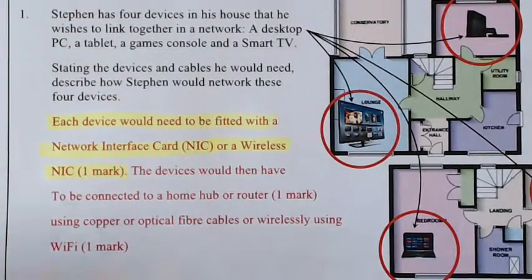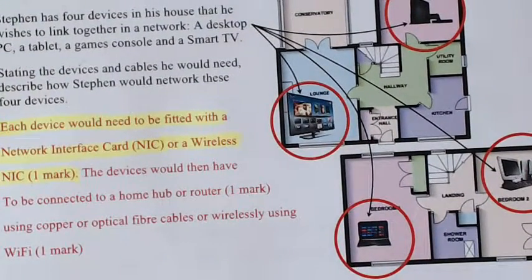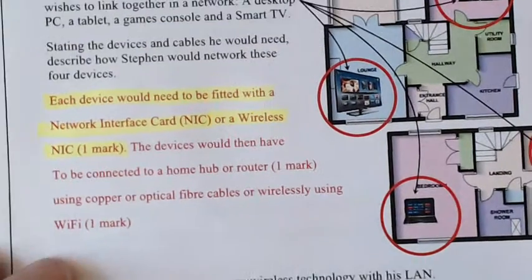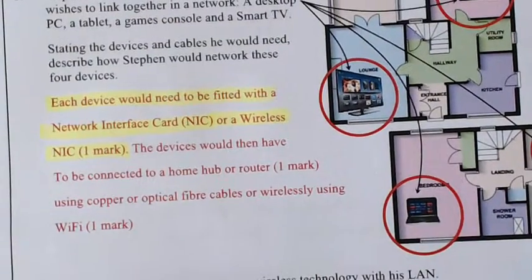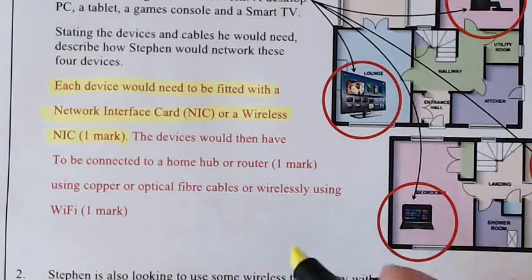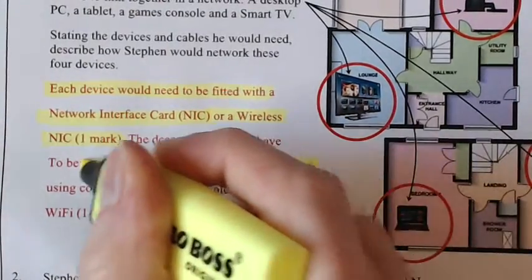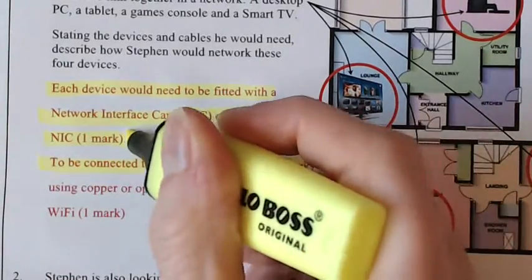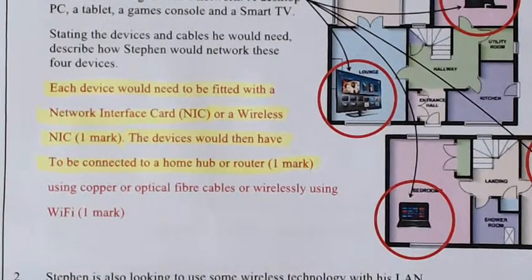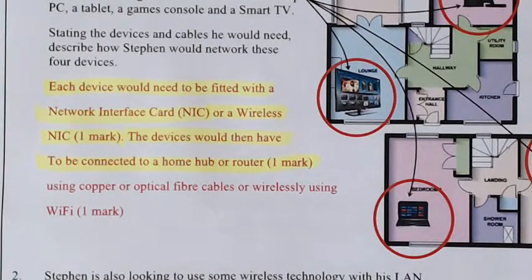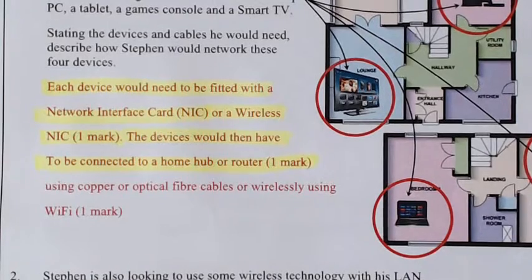You can get wireless network interface cards or wired ones. After that, you want to connect each of these devices to either a hub or a router. Remember, a router allows one network to connect to another network — that's your second mark.